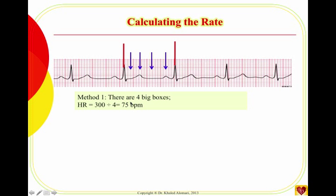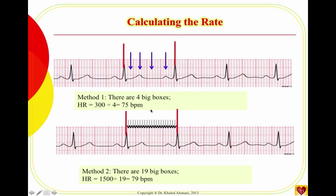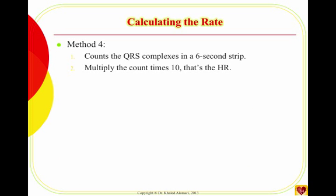The result could be 77 or 73 — it doesn't matter much because the normal heart rate range of 60 to 100 is wide enough that a difference of two or three is acceptable. However, if you get a heart rate near the boundary, like 60, a small error could change the interpretation. Using the small box method on the same rhythm gives 1500 divided by 19, which equals 79 — slightly more accurate, but both are clinically equivalent here.